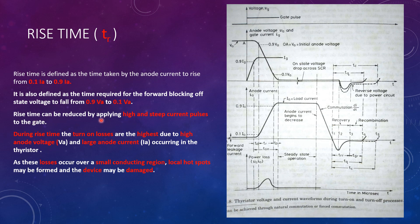The rise time can be reduced by applying high and steep gate current pulses. During rise time, turn on losses are the highest due to high anode voltage and large anode current occurring in the thyristor. As seen here, there are high anode voltages and high anode current, therefore the losses are high. As these losses occur over a small conducting region, local hotspots may be formed and the device may be damaged.